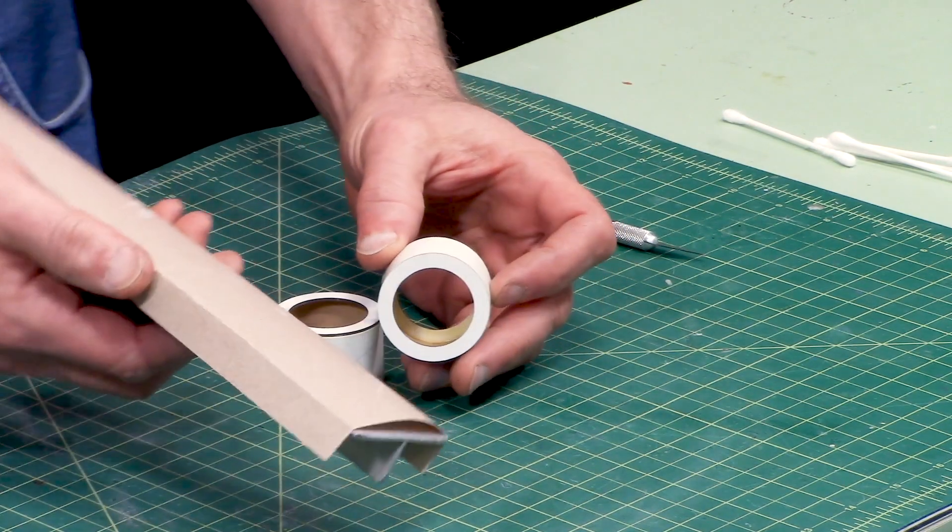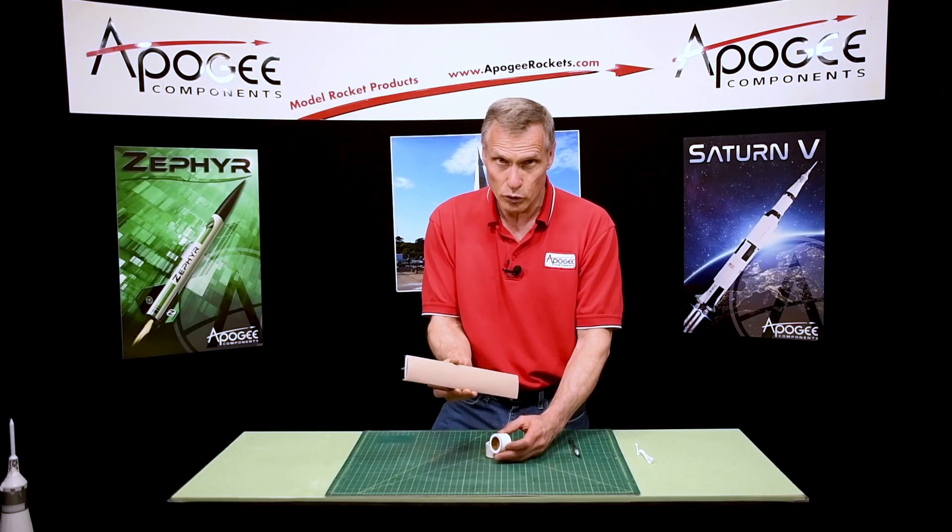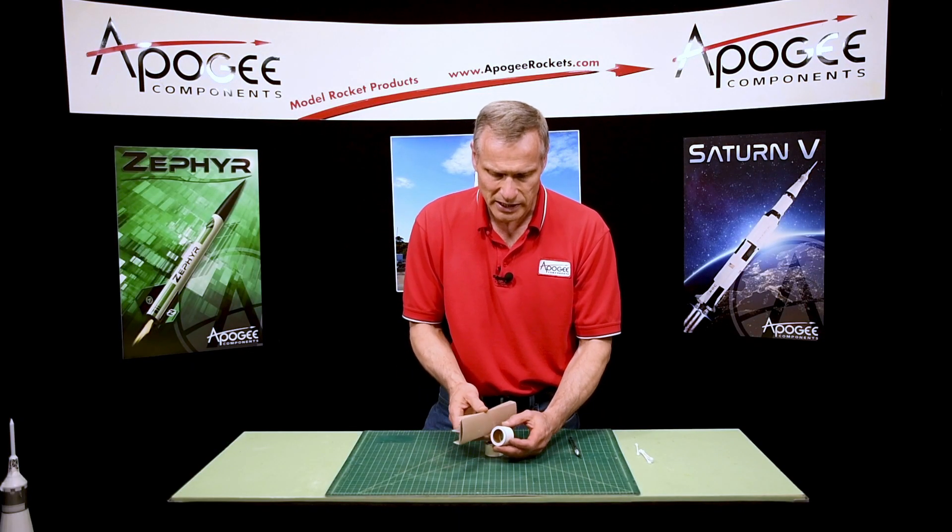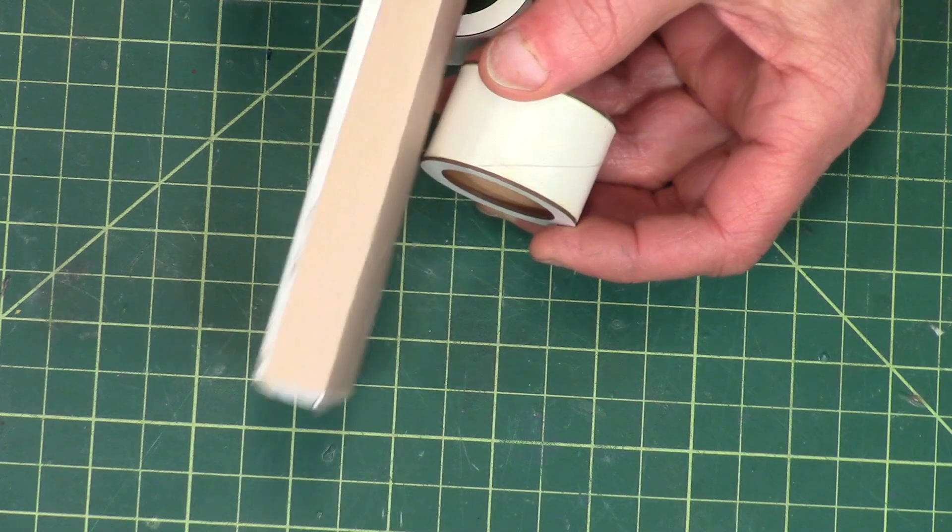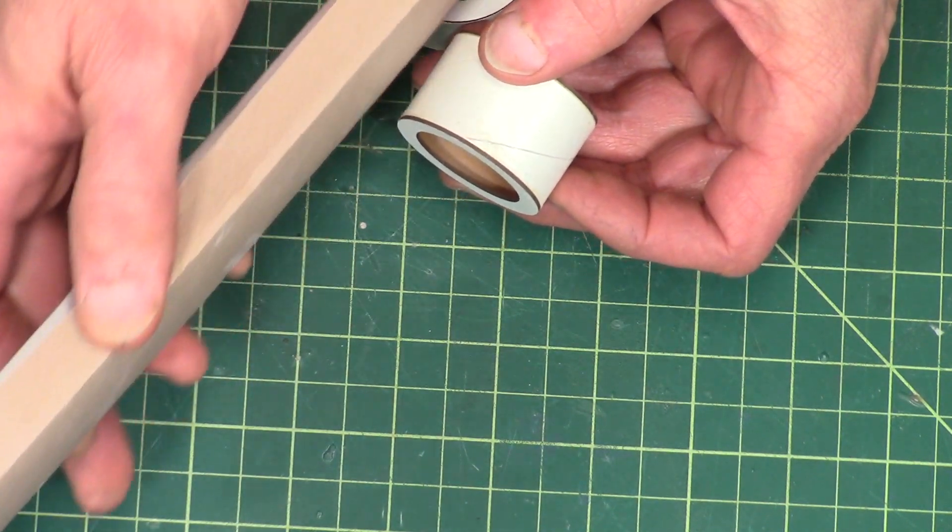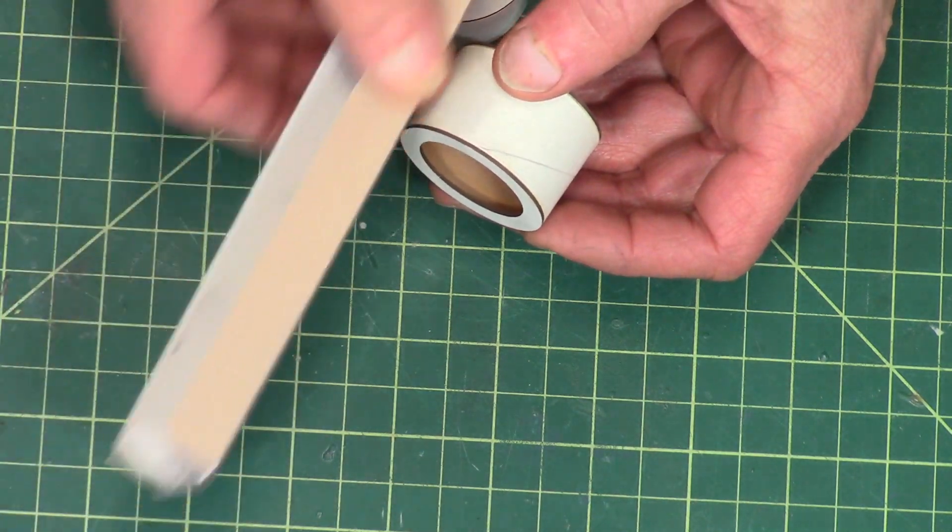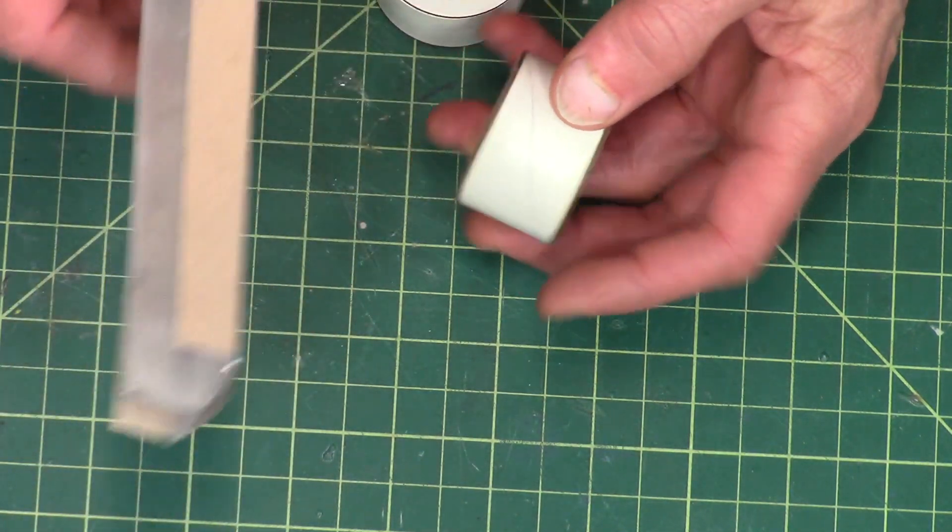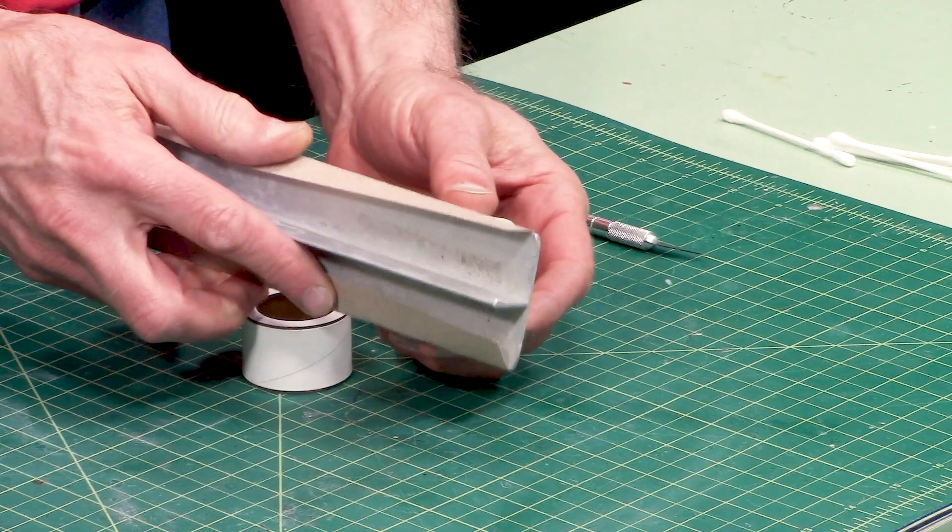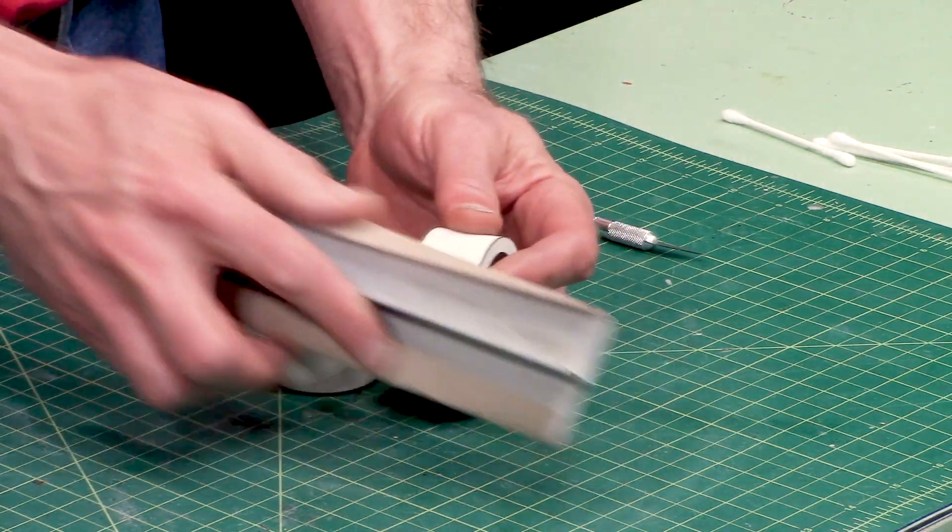We're going to take some medium grit sandpaper, this is like 220 grit, and we want to sand that off. But we don't want to sand away from the ring so we pop the ring off. We always want to sand towards the tube. I'm looking for a part of the ring that might be hanging over.